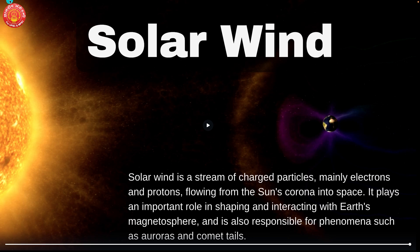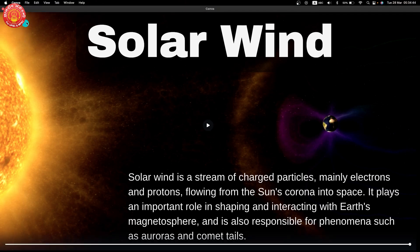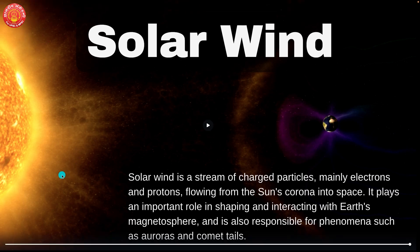In this picture you can see the sun and its photosphere. From the photosphere of the sun, there is a continuous flow of charged particles towards the outer parts of the sun, and this flow of charged particles is nothing but solar wind.